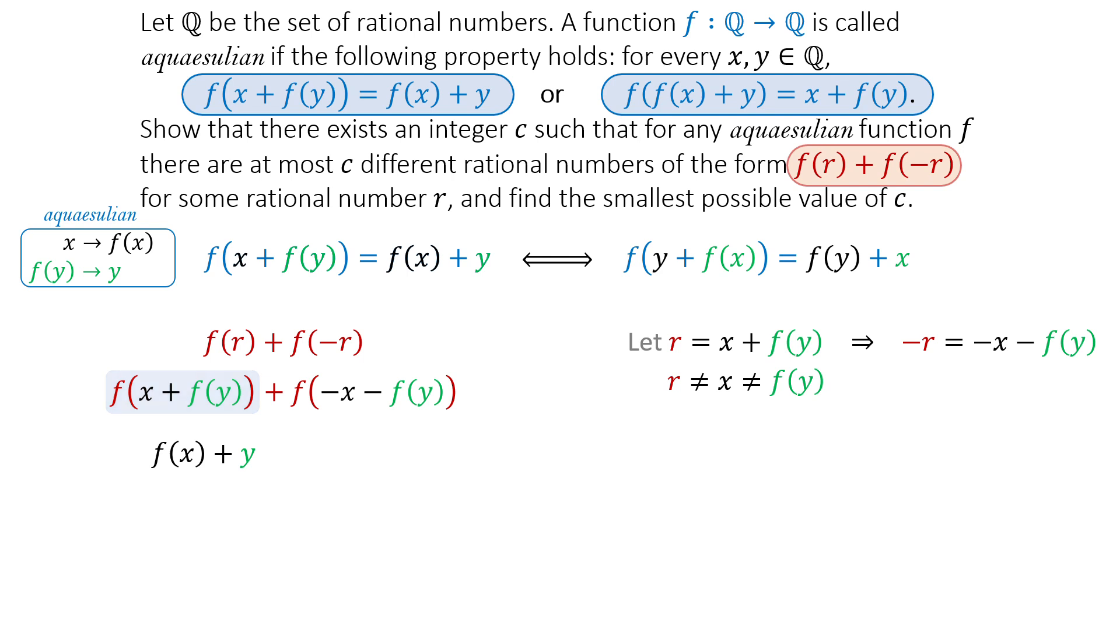We can now express this part in two ways. First, x becomes f(x), and f(y) becomes y. We get -f(x) - y. Here, everything cancels, and we get zero. Now we have f(r) + f(-r) = 0.